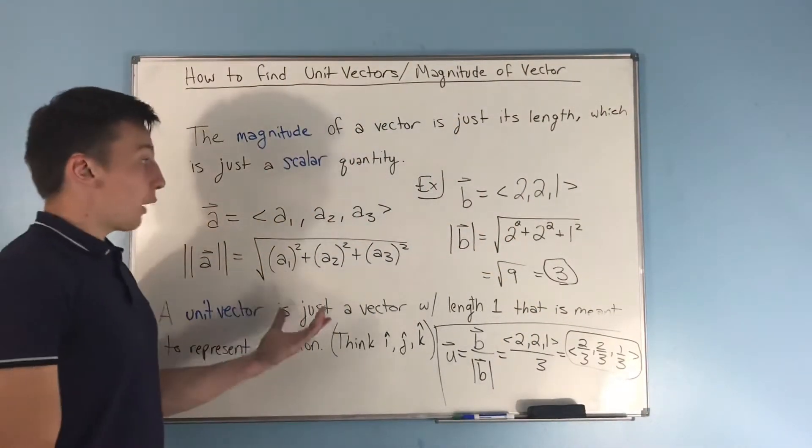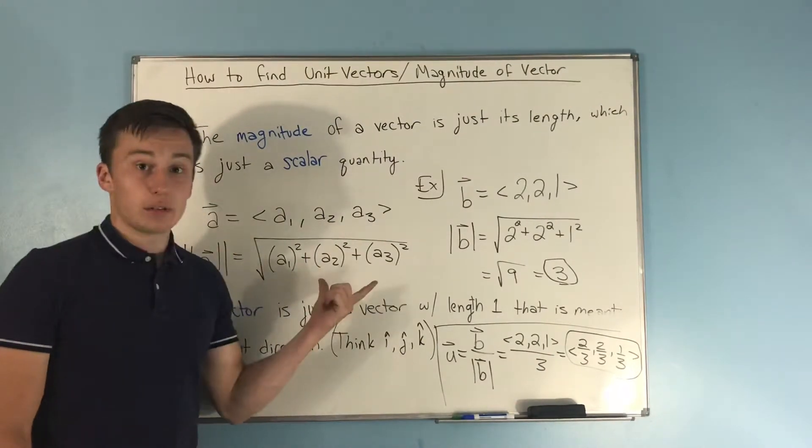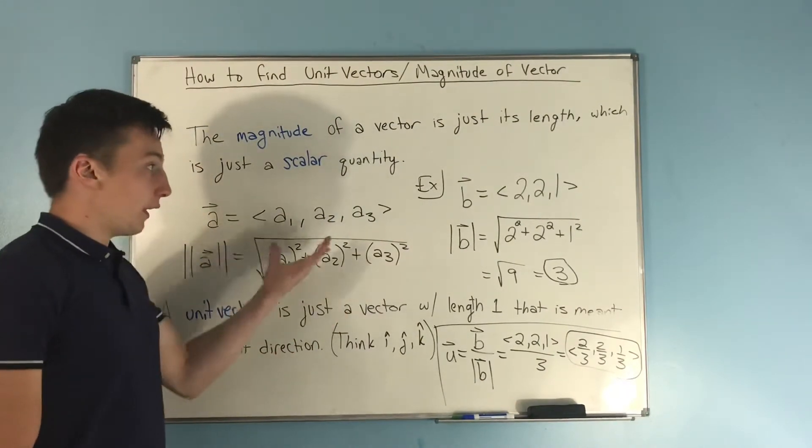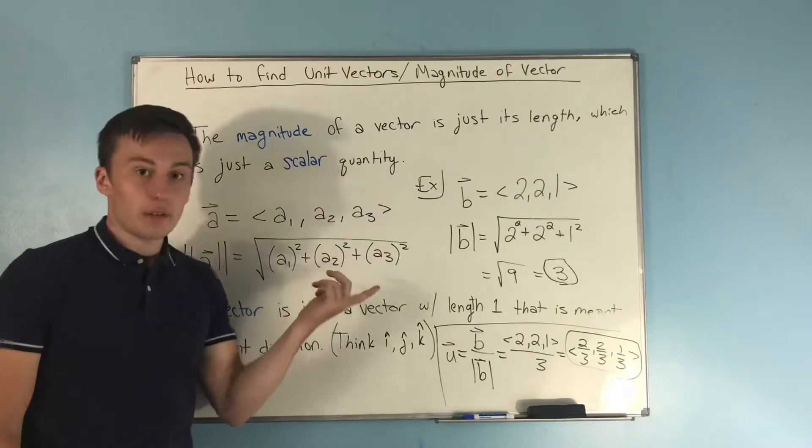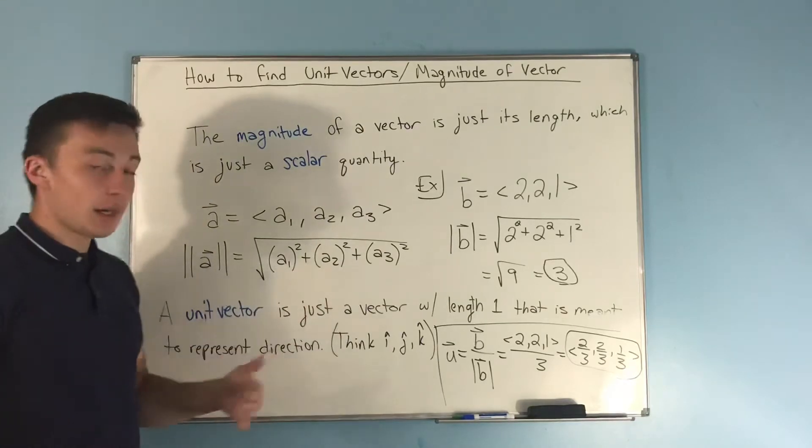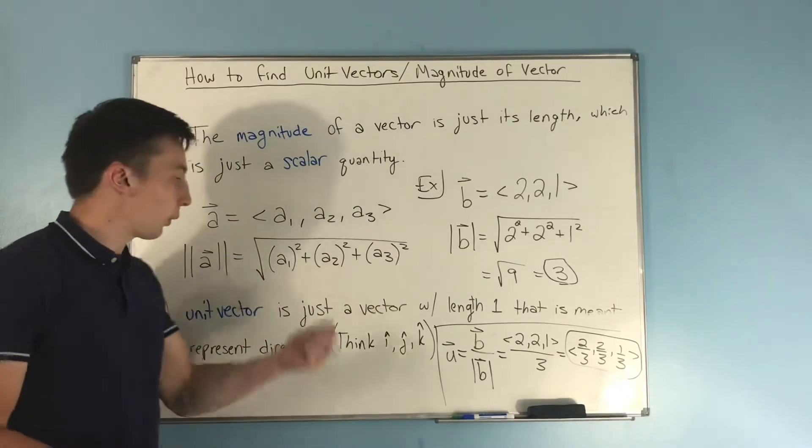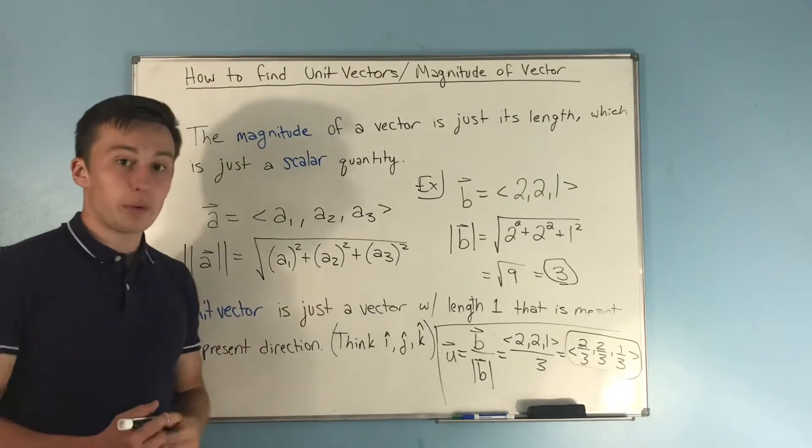How to find the magnitude of a vector? Well we're just using our distance formula. But with a vector, really, the distance formula is already half done for you. Instead of having like an x2 minus x1, well that is your x component. So that's what goes in your square root.